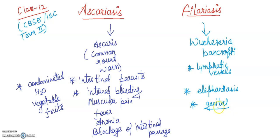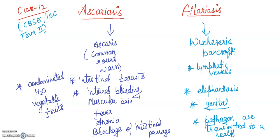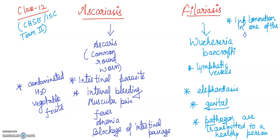The pathogens are transmitted to a healthy person through the bite of a female mosquito vector. Symptoms include inflammation in one of the lower limbs.